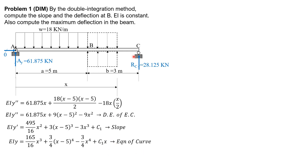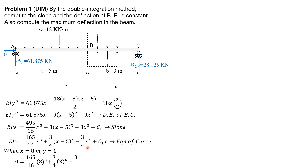For the other boundary condition, when x is 8, y is 0. Substituting into the equation of the curve: 165/16 times 8 cubed plus 3/4 times 3 to the 4th (since 8 minus 5 is 3) minus 3/4 times 8 to the 4th plus C sub 1 times 8 equals zero. Solving for C sub 1, we get C sub 1 equals negative 9075 over 32.